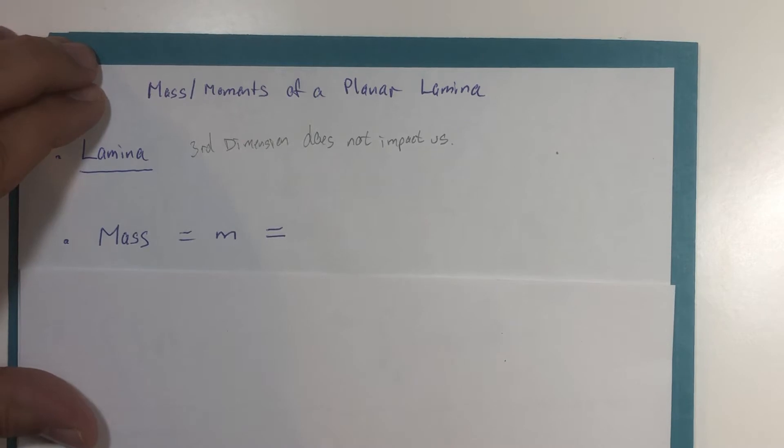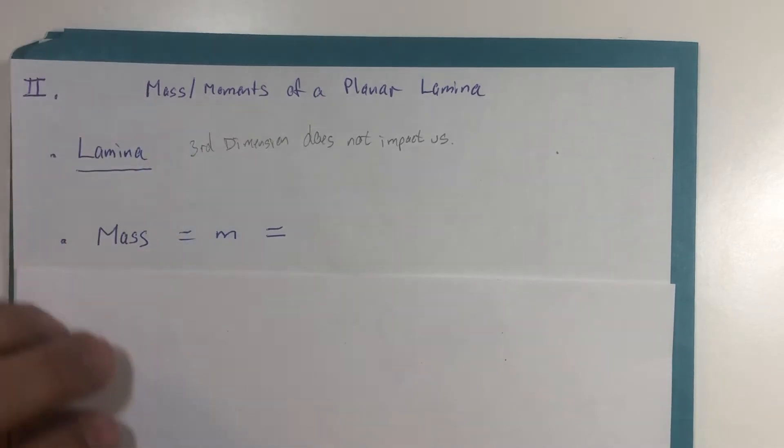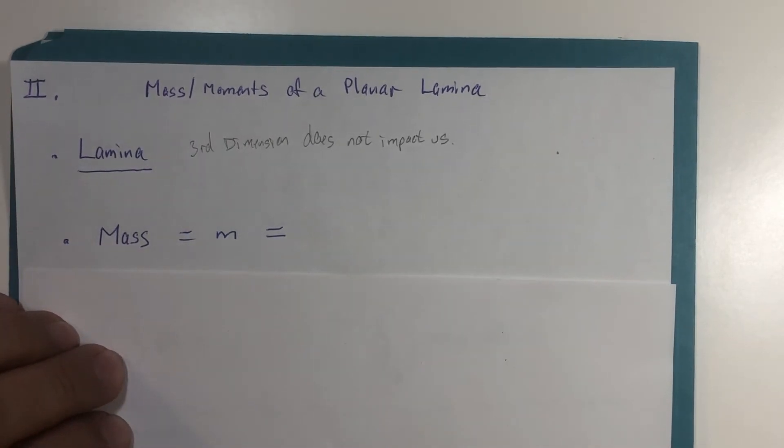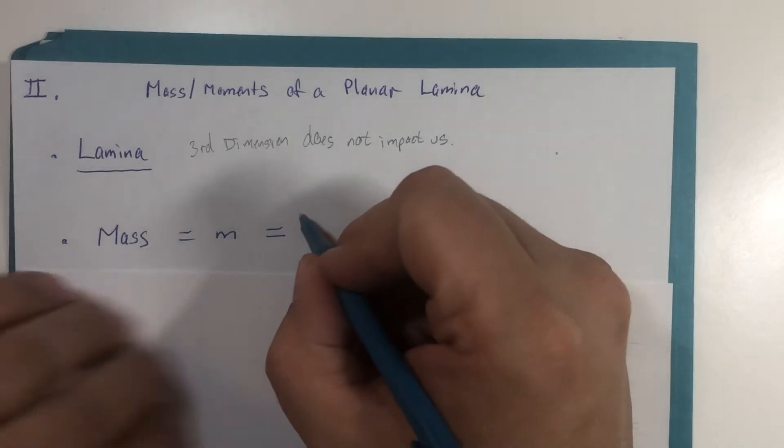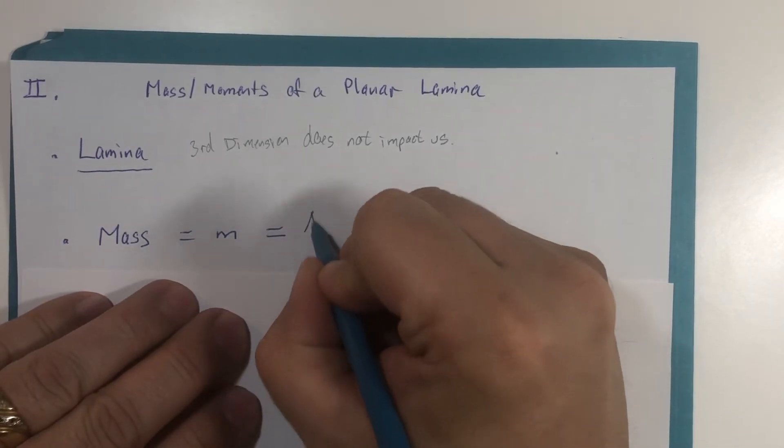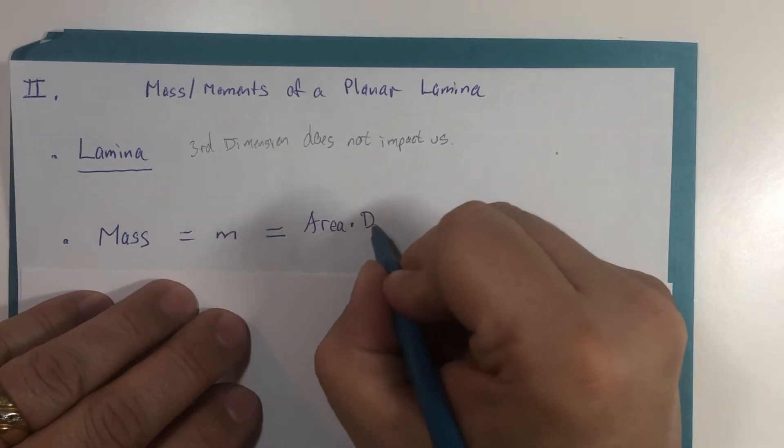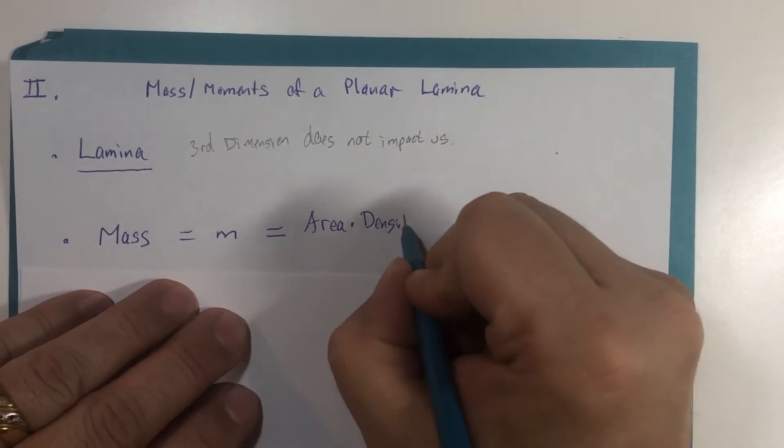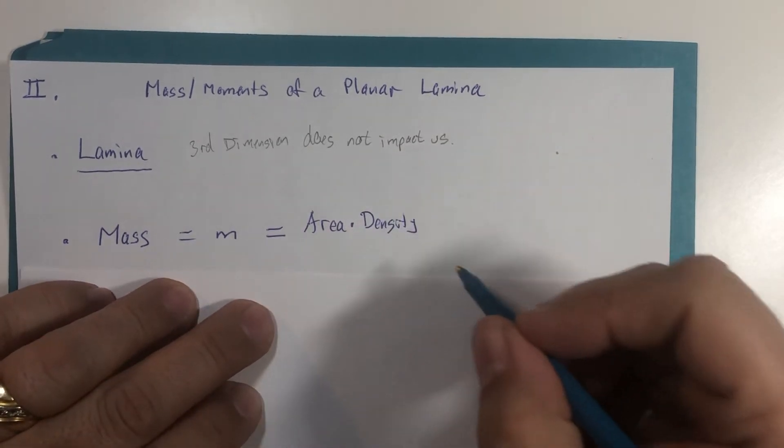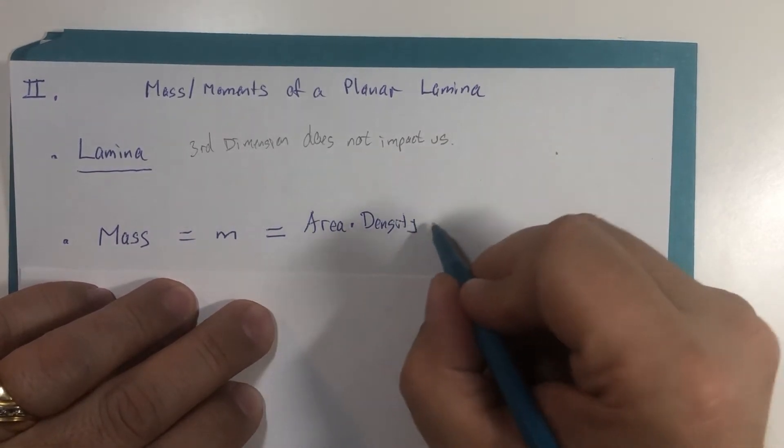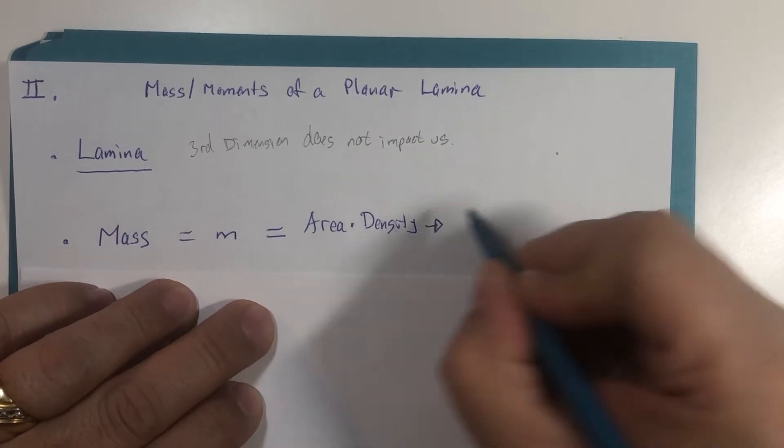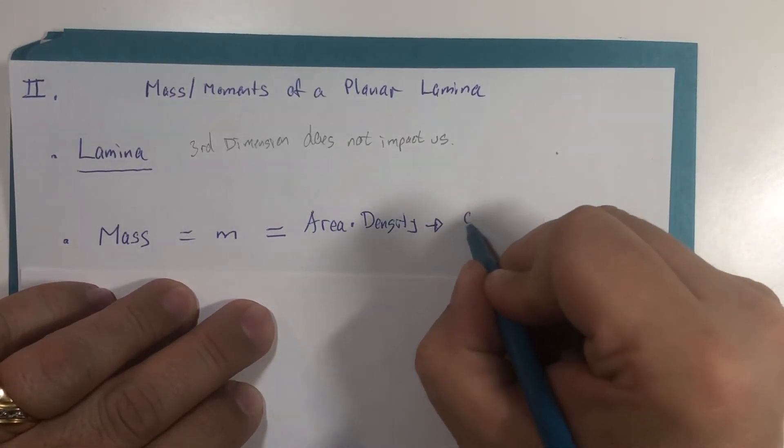One other basic fact I need to give to you is that when you're calculating the mass of something, we would need the area of the region multiplied by its density. So we would calculate that as, for example, not an only example but just one example, square centimeters could be our area.